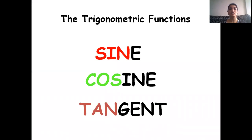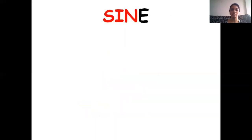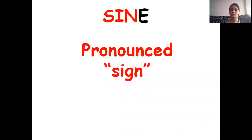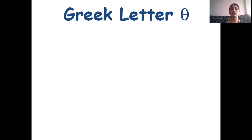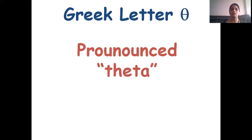There are three functions of an angle commonly used in trigonometry. Their names are sine, cosine, and tangent. Sine is pronounced sine, cosine is pronounced cosine, tangent is pronounced tangent, and the Greek letter theta is pronounced theta.